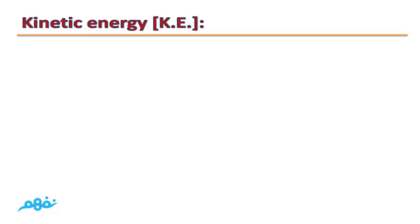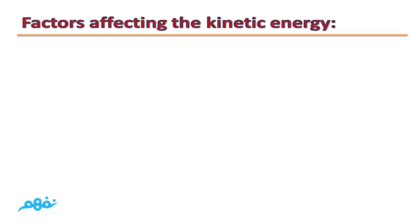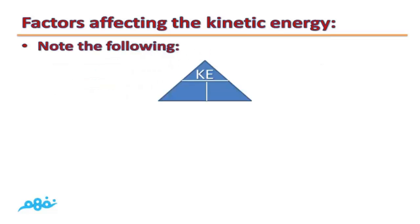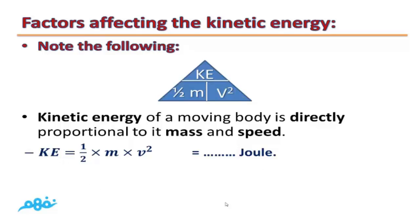Kinetic energy — what is meant by kinetic energy? It is the work done during the motion of an object. The factors affecting kinetic energy include the velocity of the object. Kinetic energy of a moving object increases by increasing the speed or velocity of motion. Kinetic energy equals half times mass times velocity squared. This means that kinetic energy of a moving object is directly proportional to its mass and its speed or velocity. The measuring unit of kinetic energy is joule.